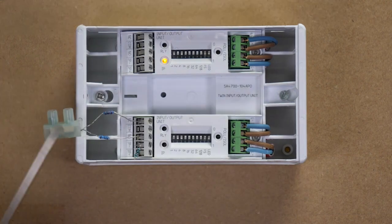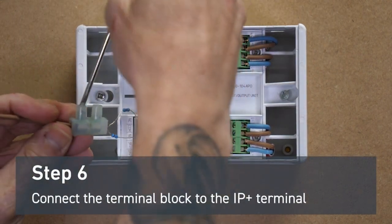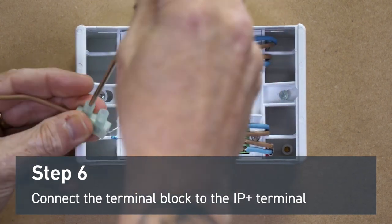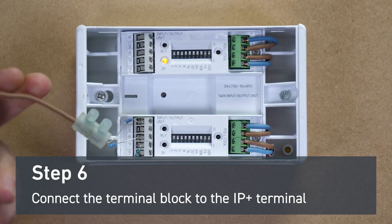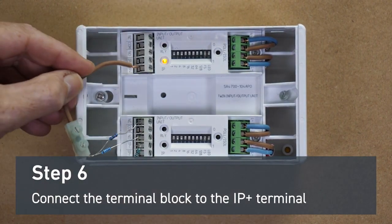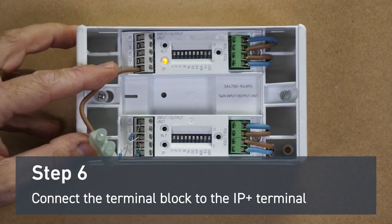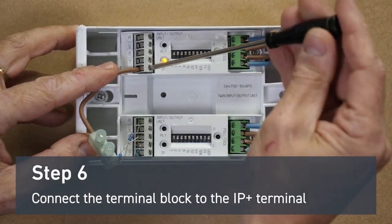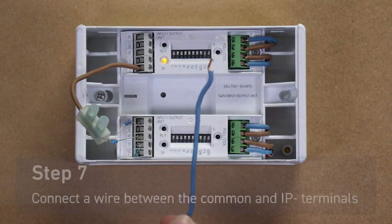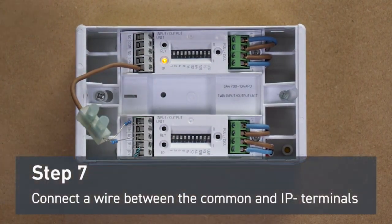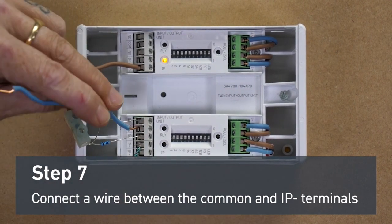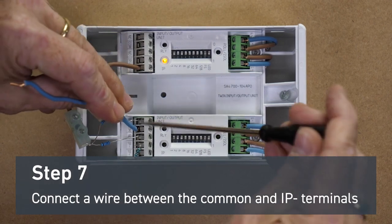Then we connect a wire from the other end of the terminal block into the IP positive of our top IO unit. Now we take a wire connection from the common to the input negative of our top IO unit. This should cause the input fault light to extinguish.